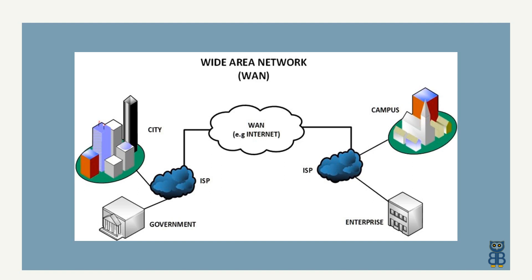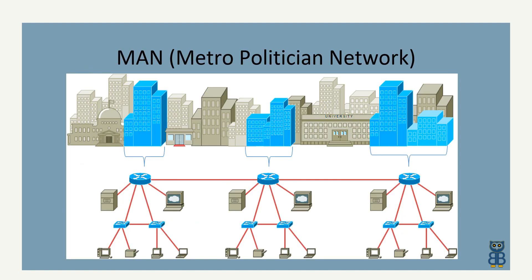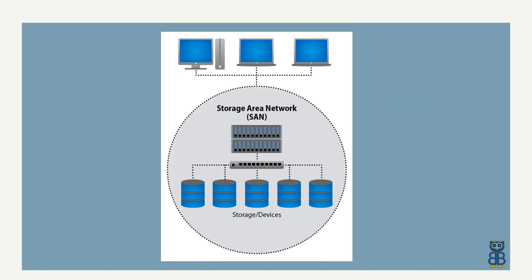A MAN, or metropolitan area network, is another category of network, though the term is not prevalently used. A MAN is defined as a network that connects LANs across a city-wide geographic area. A SAN, or storage area network, provides systems with high-speed, lossless access to high-capacity storage devices. This type of network is usually deployed to build a data center.